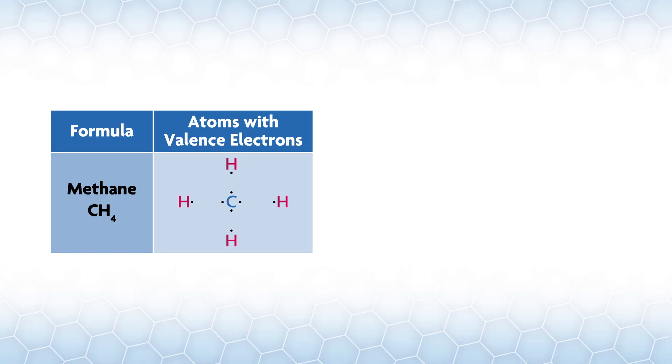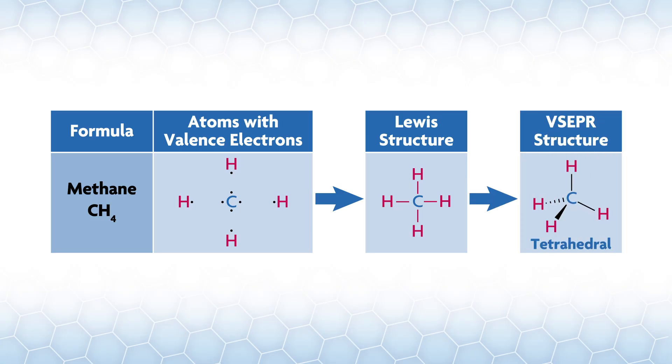VSEPR uses domains - regions of electron density around the central atom. The domains can be bonding pairs of electrons or lone pairs. The first step is always to draw the Lewis structure for the compound in two dimensions. Let's take methane, CH4. Carbon has four valence electrons and each hydrogen has one.